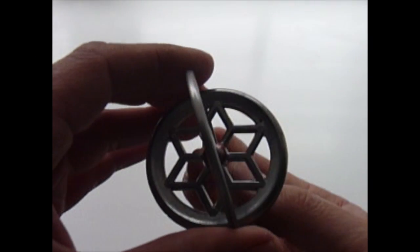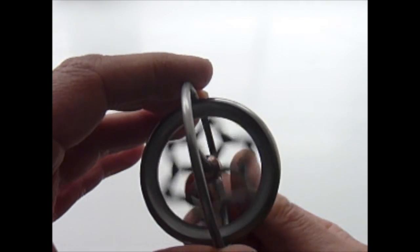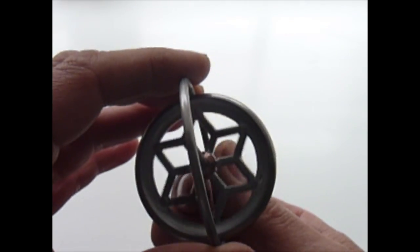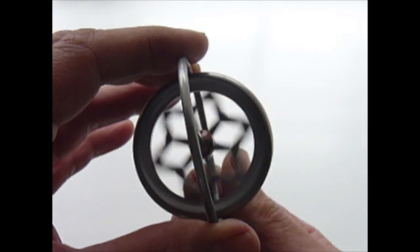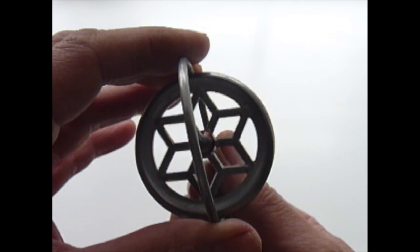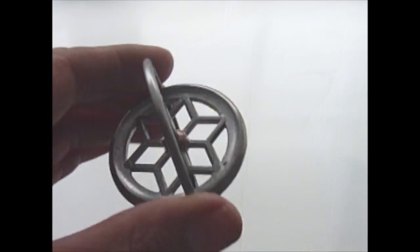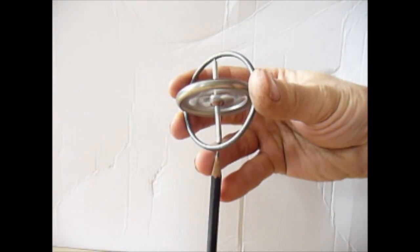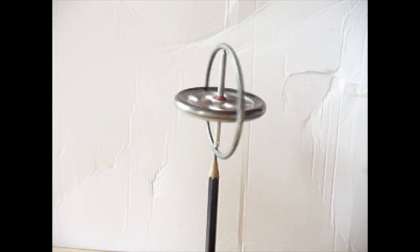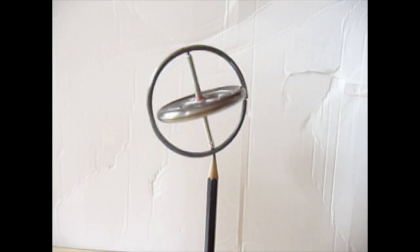A working gyroscope is basically a spinning flywheel. The spinning force is known as angular momentum and when not interfered with, this force is conserved or stored in a single direction in accordance with Newton's laws of motion.